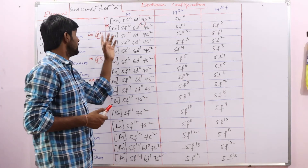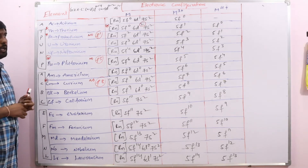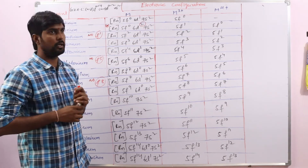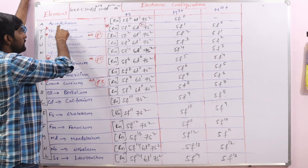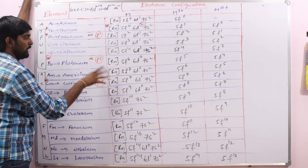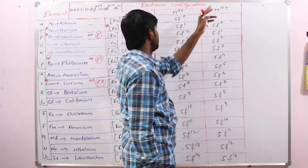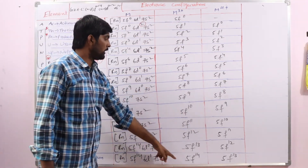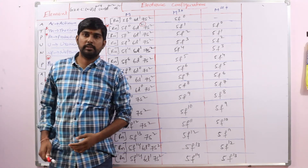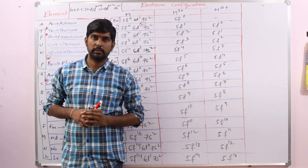So this is the electronic configuration of actinoids. First we should know the elements — remember them using the mnemonic code — and after that, wherever there is an exception, remember only those. There are 3 exceptions present in the actinoid elements in the neutral state. In the plus 3 and plus 4 oxidation states, no exceptions generally. In the next class, we will discuss general properties of F-block elements, oxidation states, lanthanoid contraction, and related topics. Thank you.